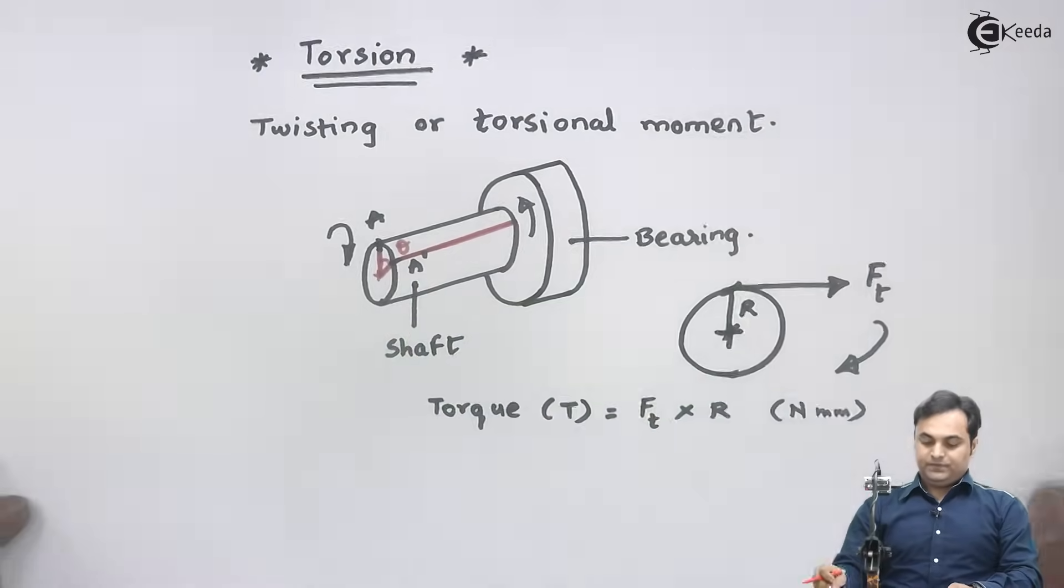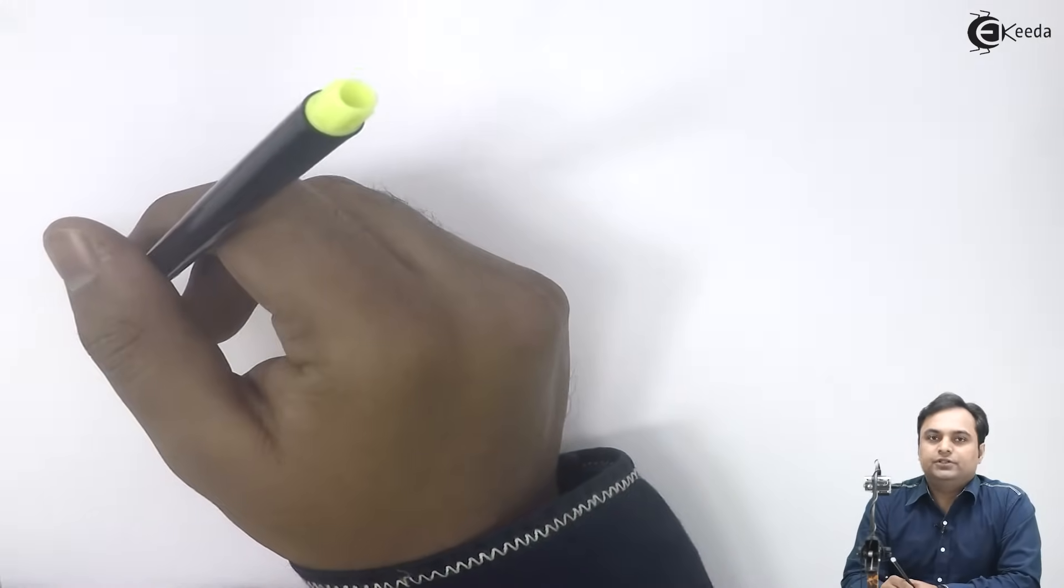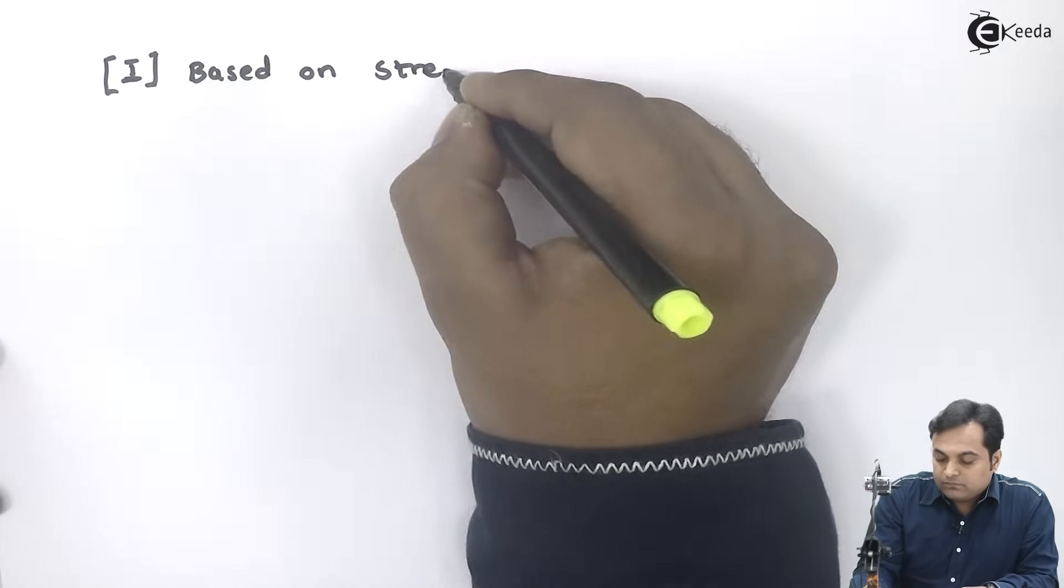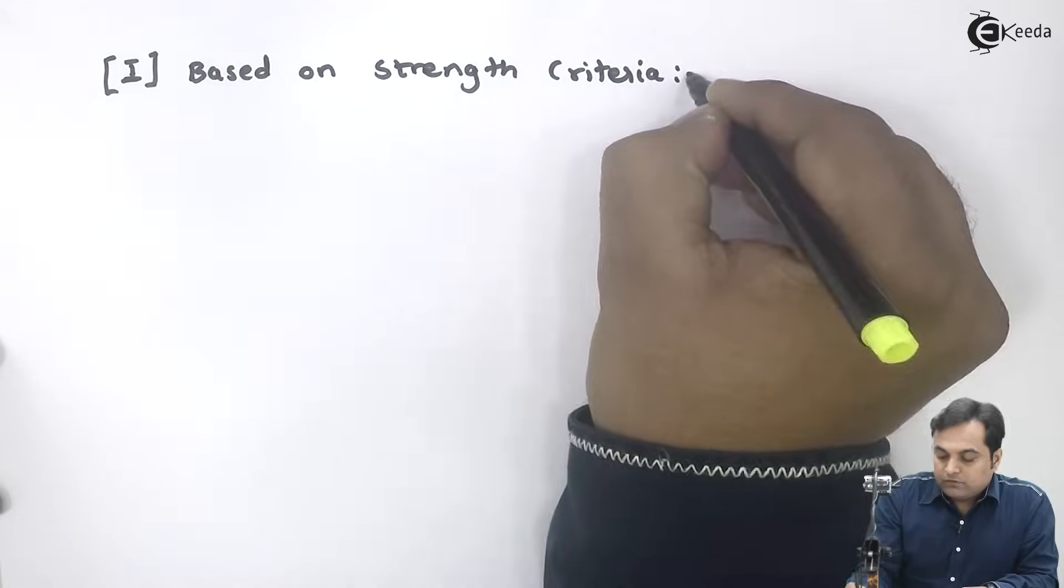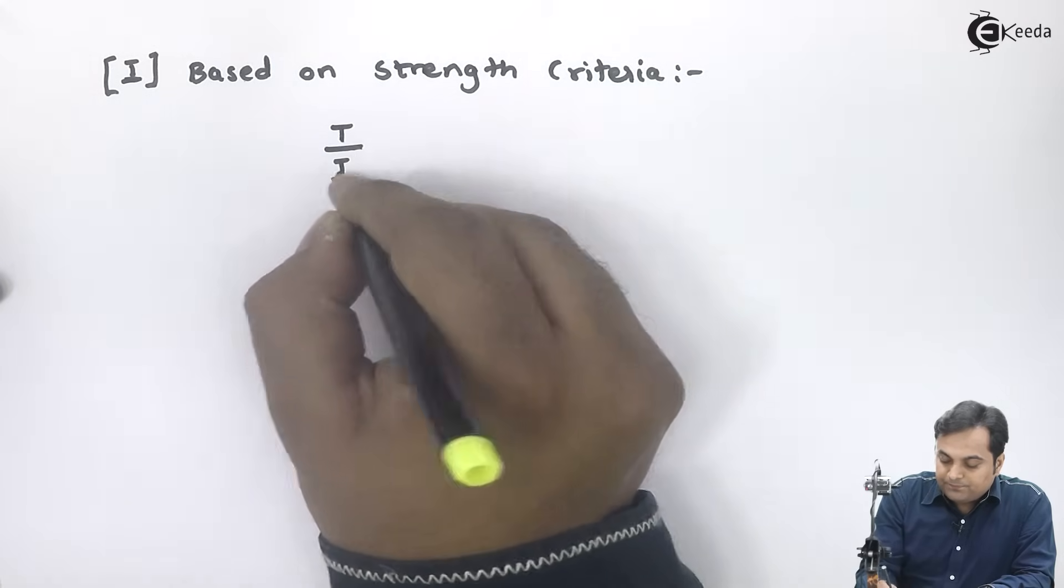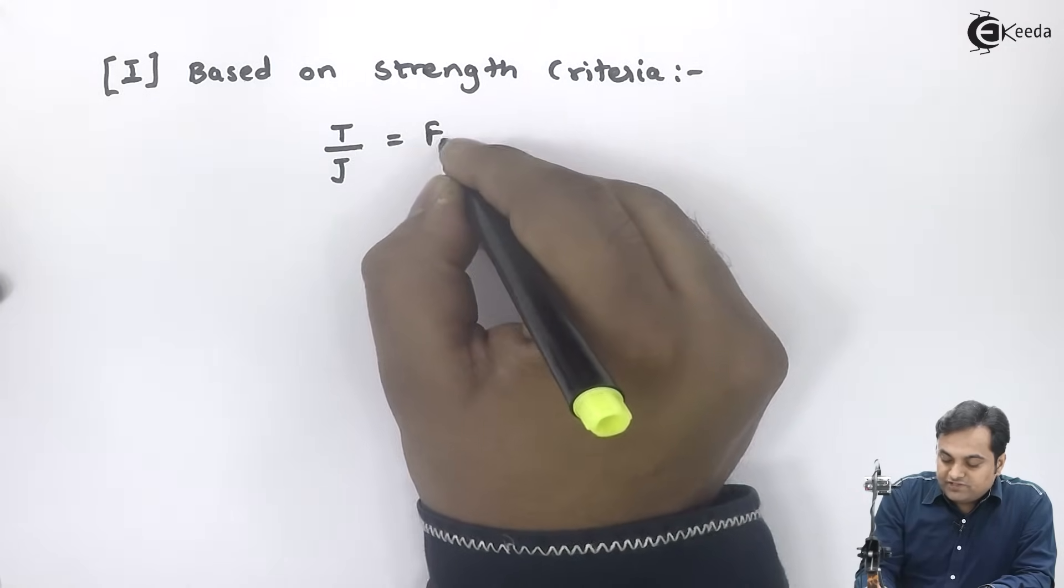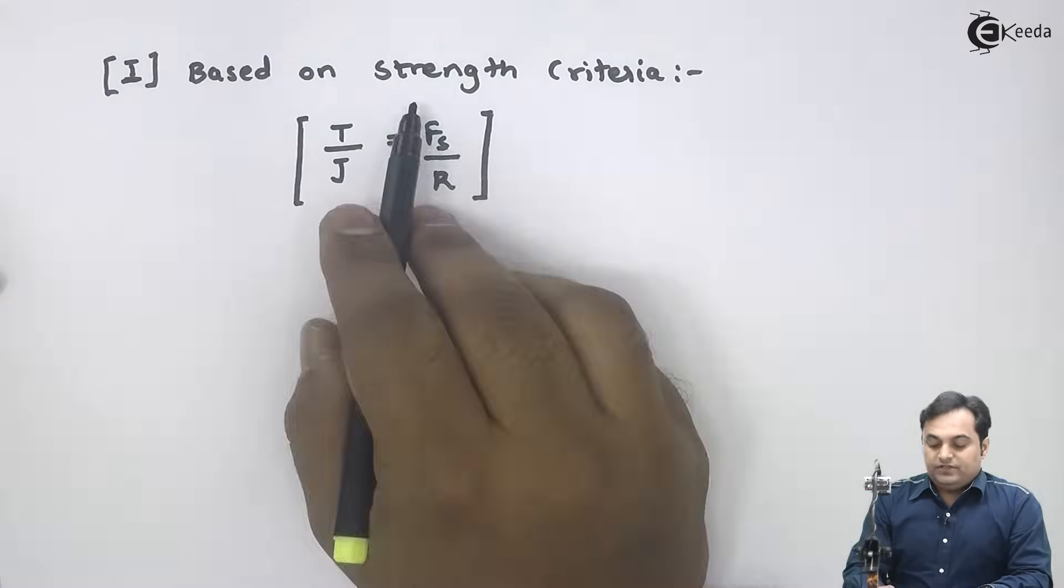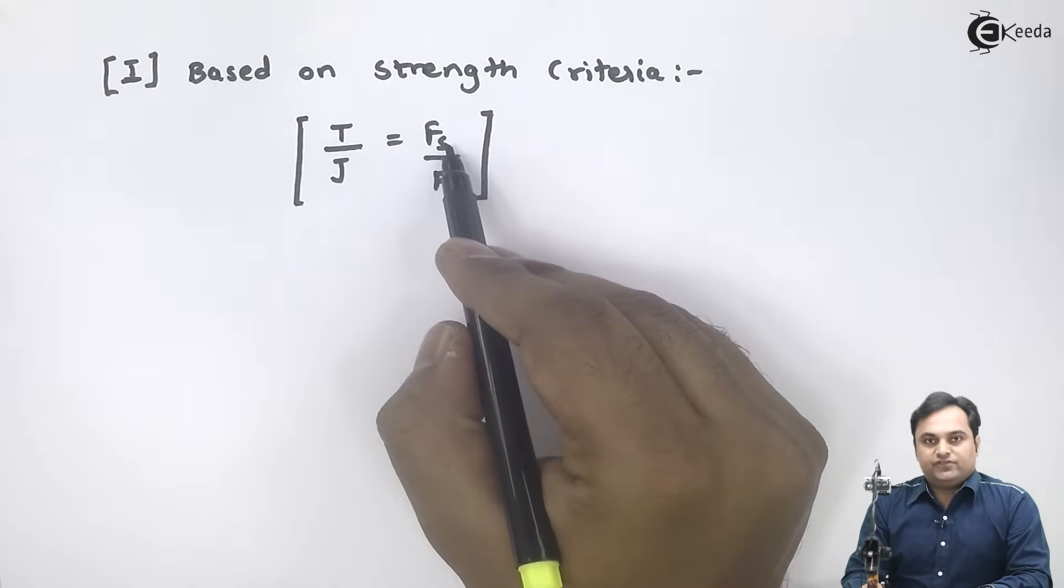Next, let me give you two equations to solve the problems on torsion. The first equation would be based on strength criteria. So based on strength criteria, we have the torsional equation as T/J = Fs/R. This is called as strength criteria because here we have shear stress.